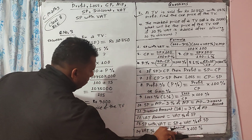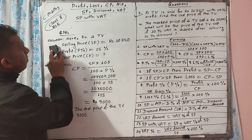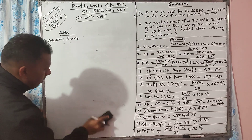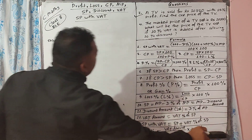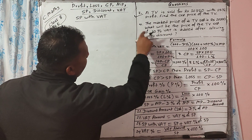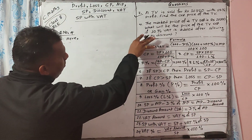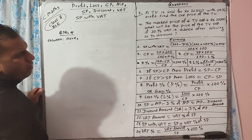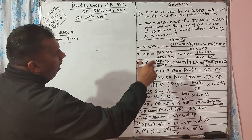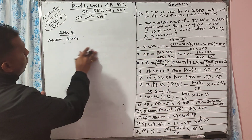Now we go to the next question — question number 4. In question 4, we have given that the marked price of the TV set is rupees 20,000. What will be the price of the TV set if 10% VAT is added after allowing 10% discount? Let's start this solution.